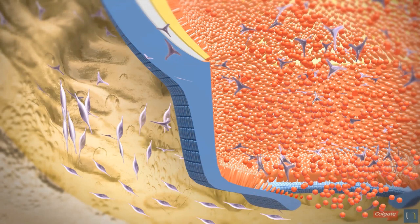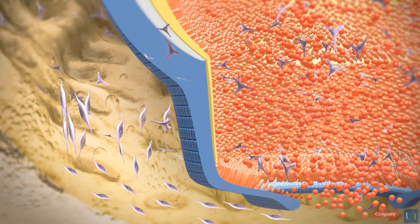The newly formed root odontoblasts then secrete the radicular mantle dentin, in contact with the inner cells of Hertwig's epithelial root sheath.